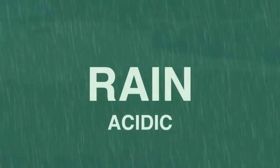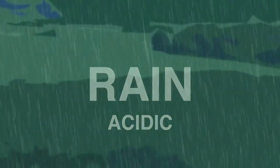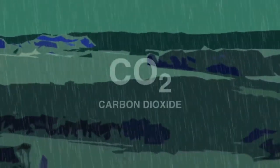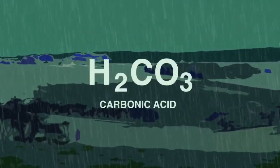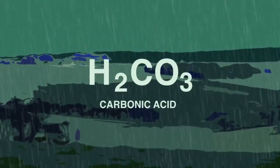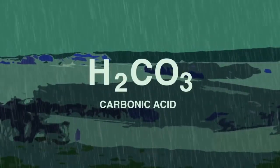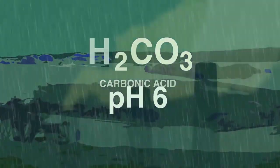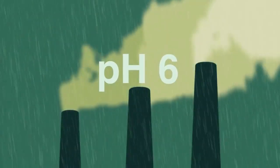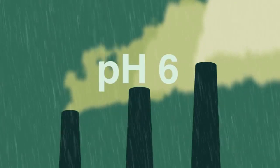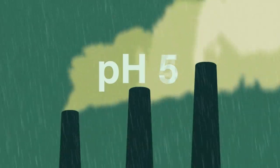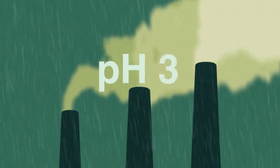Firstly, it's important to understand that rain is naturally slightly acidic. Whilst falling to the ground, the rain dissolves carbon dioxide from the atmosphere to form carbonic acid, a weak acid giving natural rain a pH of 6. It's when we burn fossil fuels that much stronger acids get into our rain to form acid rain with a pH as low as 3.